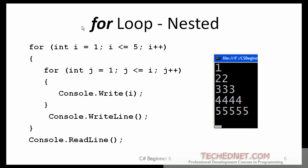Another type of FOR loop is the nested FOR loop. It is basically the same type shown earlier except there are two of them, one within another. Here is the outer loop based on counter variable i, and inside that FOR loop we have another loop based on counter variable j.